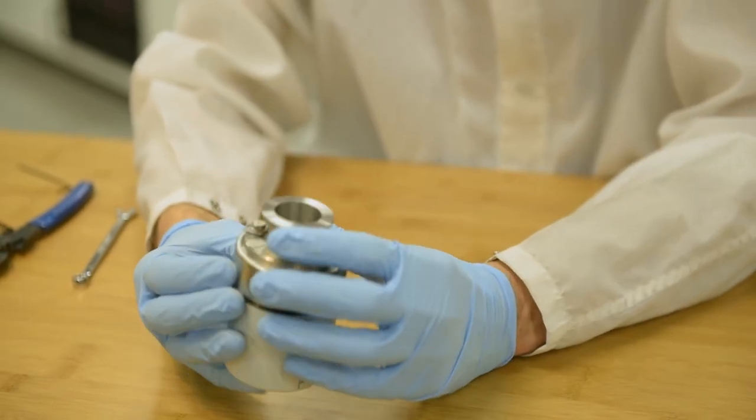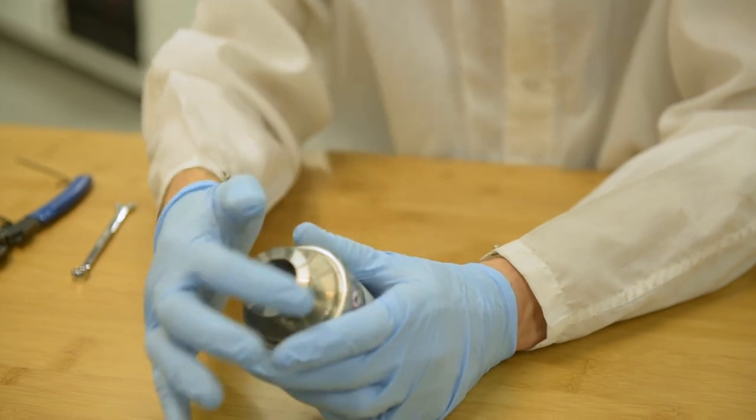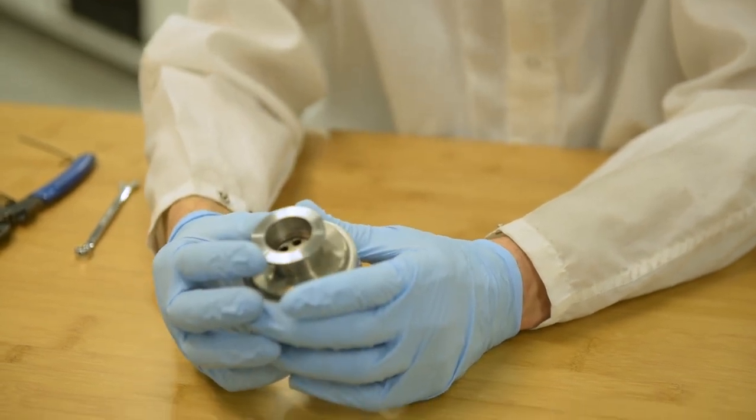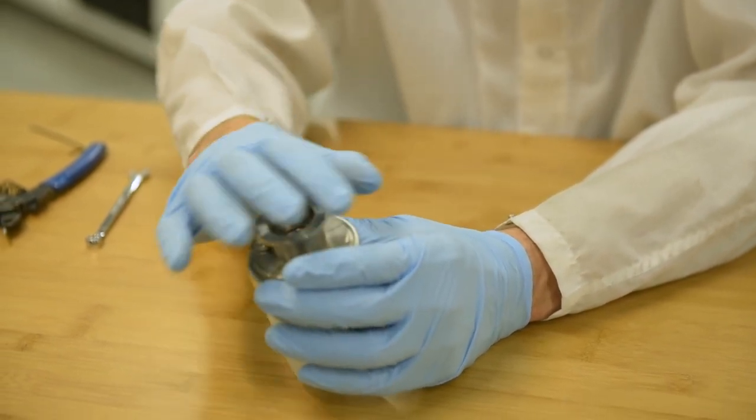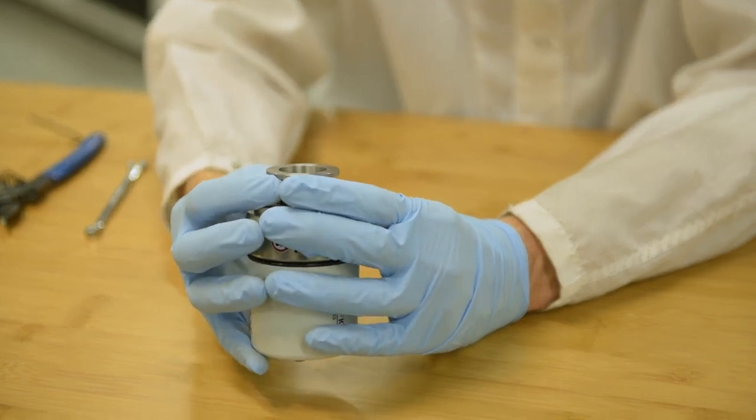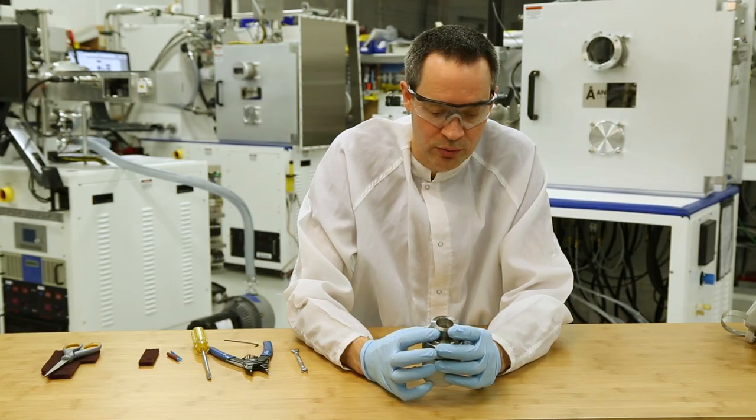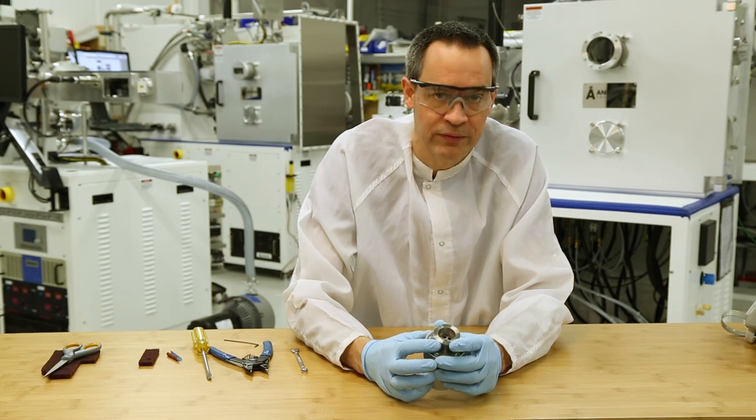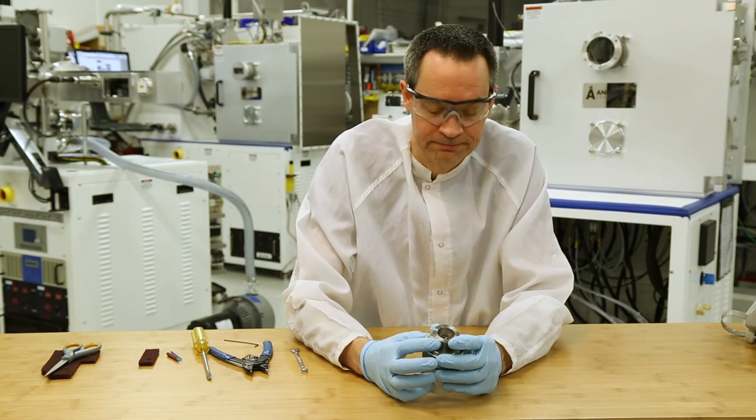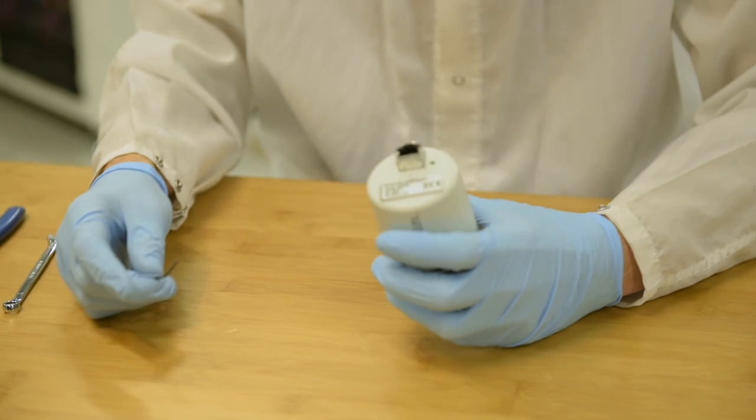Once you've removed the gauge, just be aware while you're working on it of the seal face on the gauge itself. We'll want to make sure we protect that or ensure that we don't scratch or damage that seal face while we're working on the gauge. Let's go ahead and take this gauge apart.